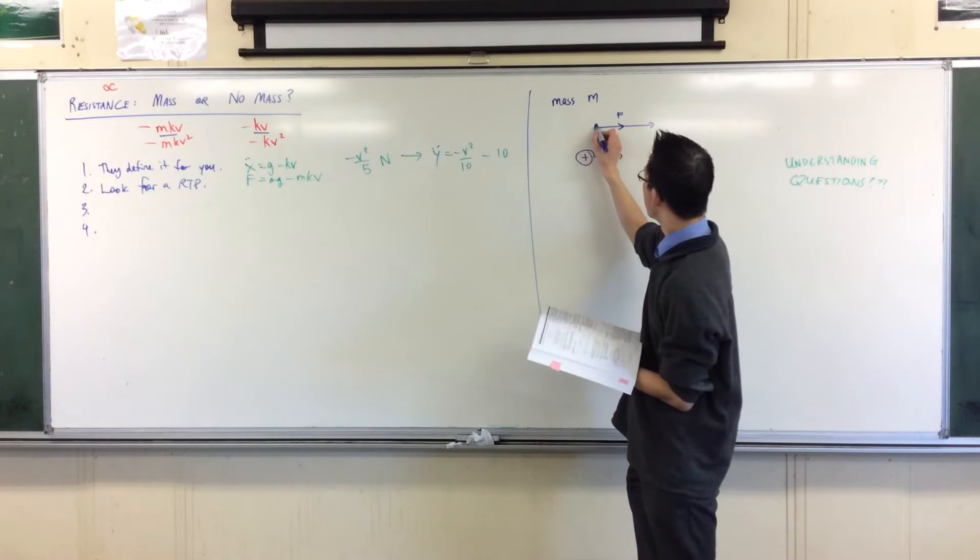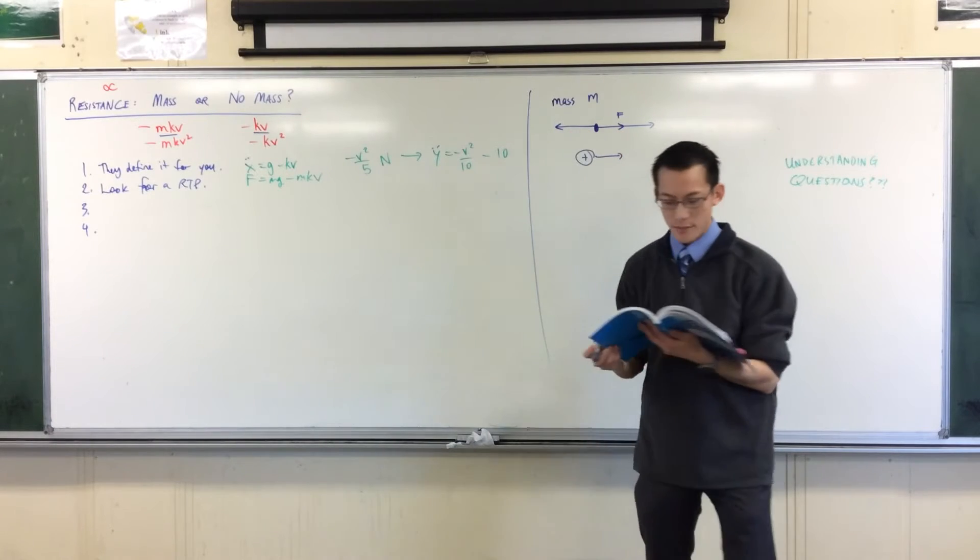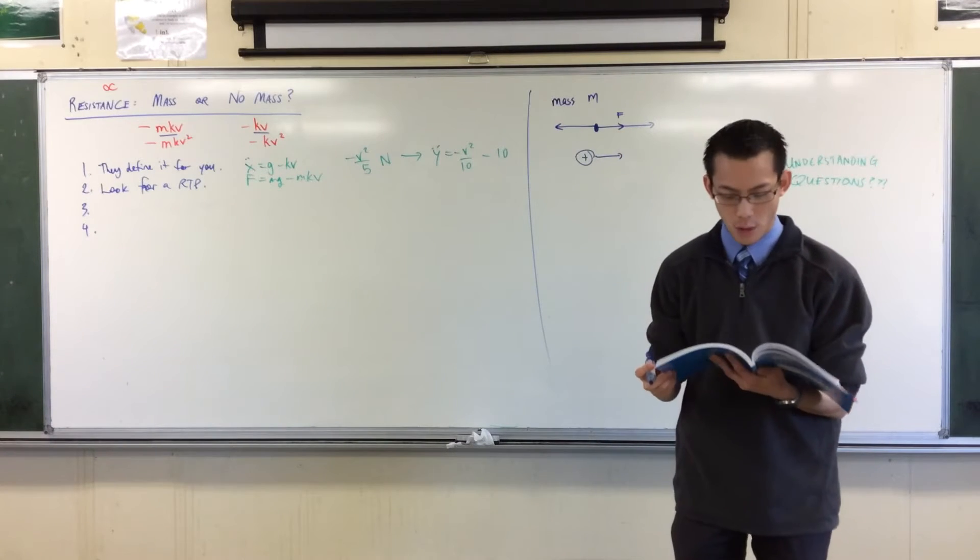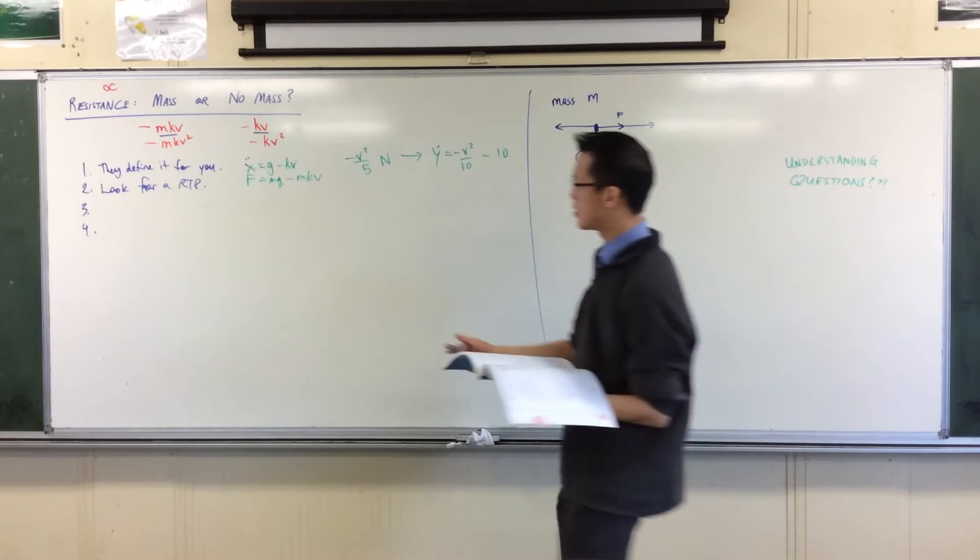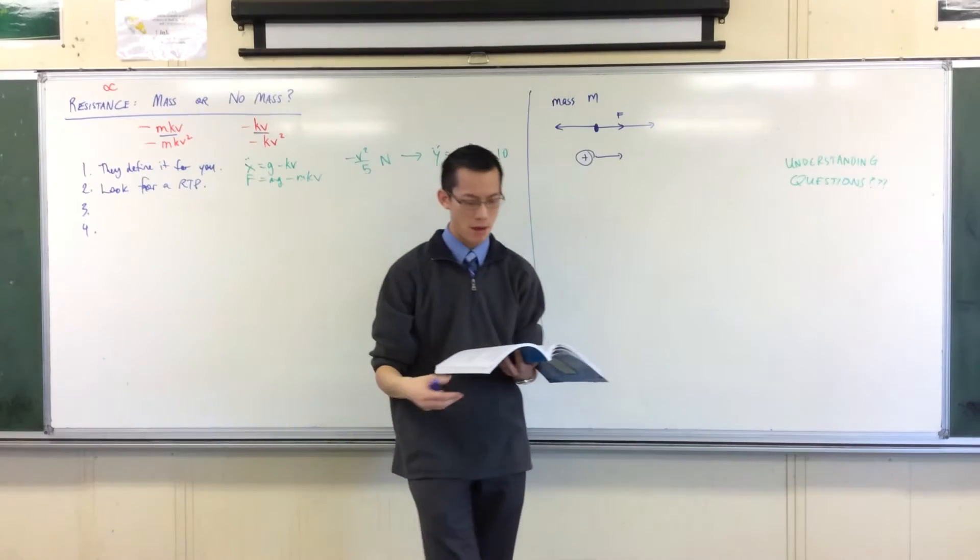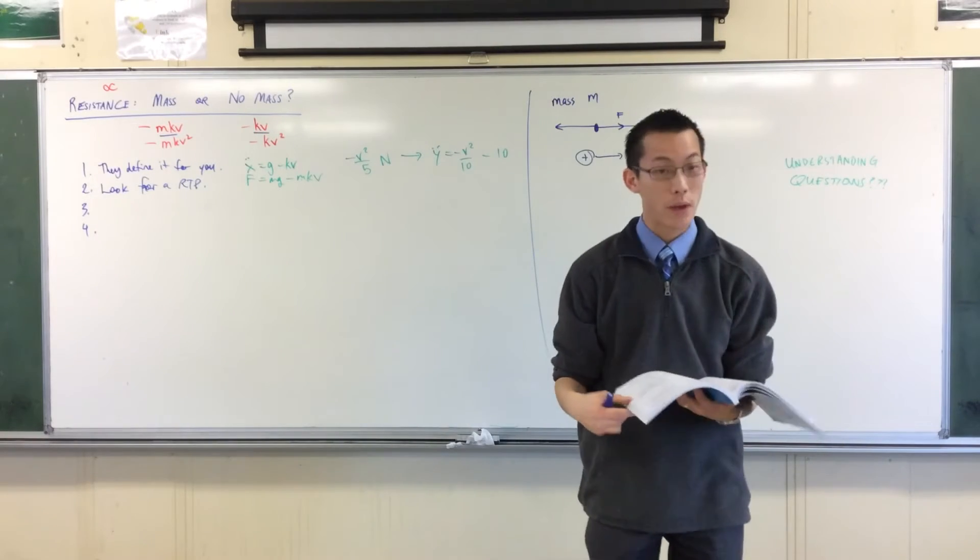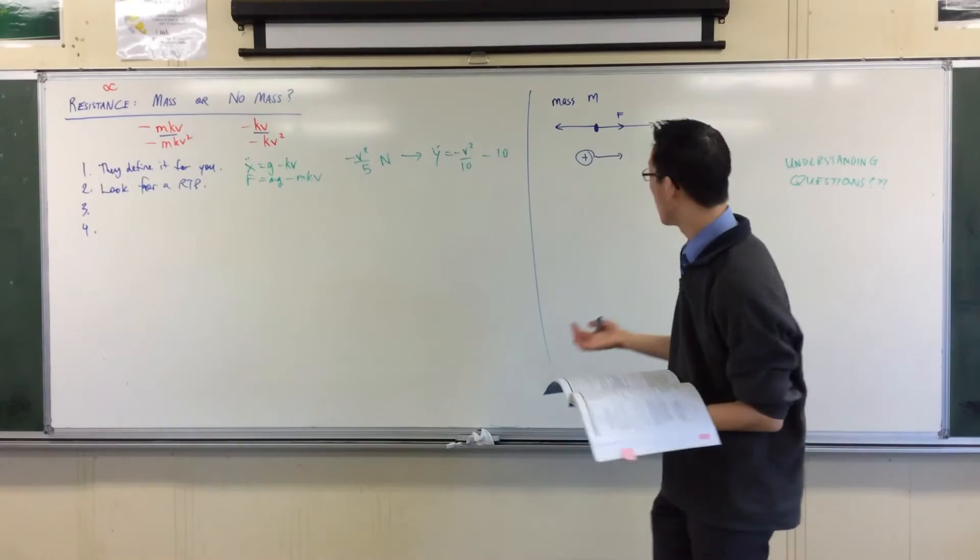Then it says the water exerts a resistive force, so it's going in that direction, a negative direction, proportional to the square of the submarine speed v. So this is now the situation where we have to choose and they don't give you an equation. So we have to choose is it going to be kv or mkv.